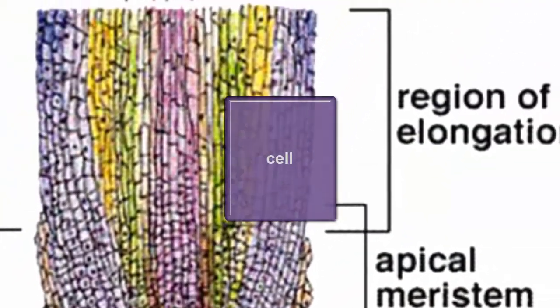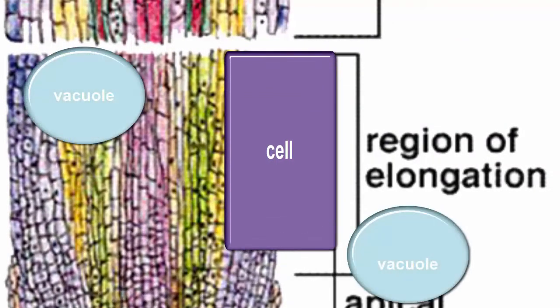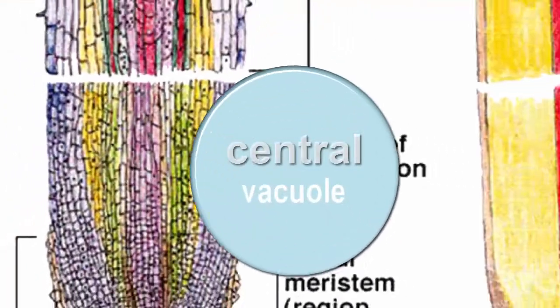The region of elongation is where cells start to increase their lengths several times. Here the tiny vacuoles of cells join to form a larger central vacuole.